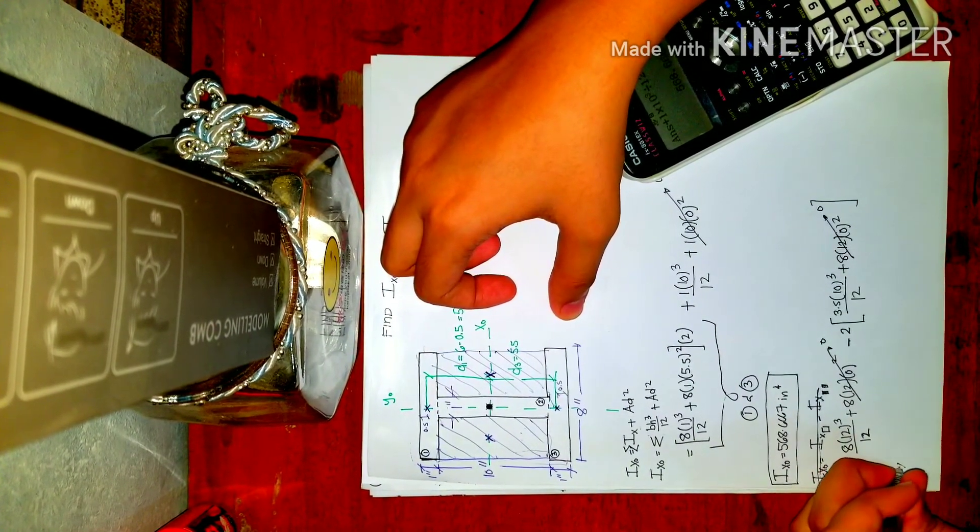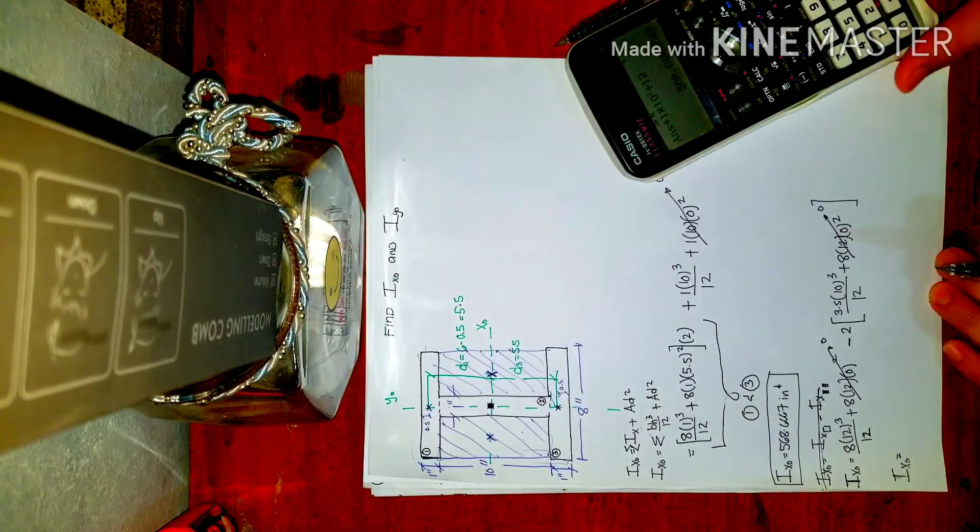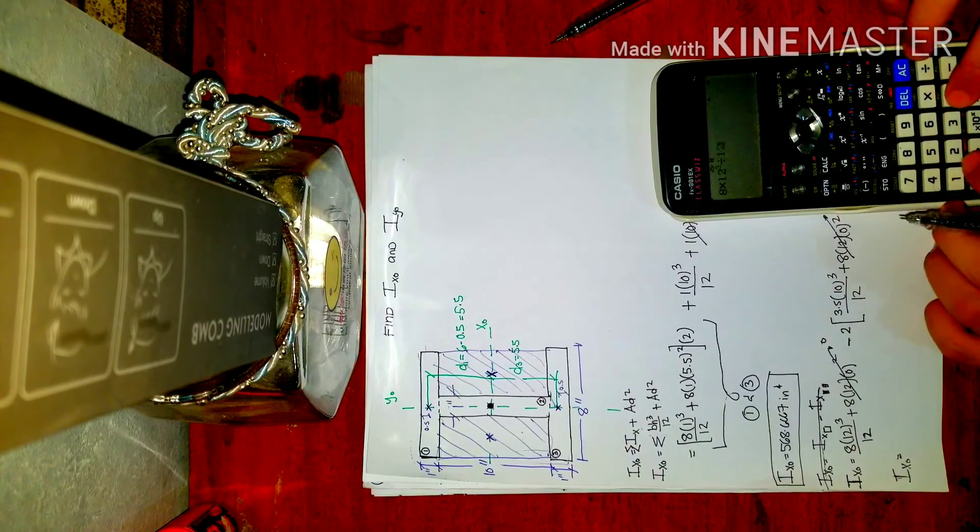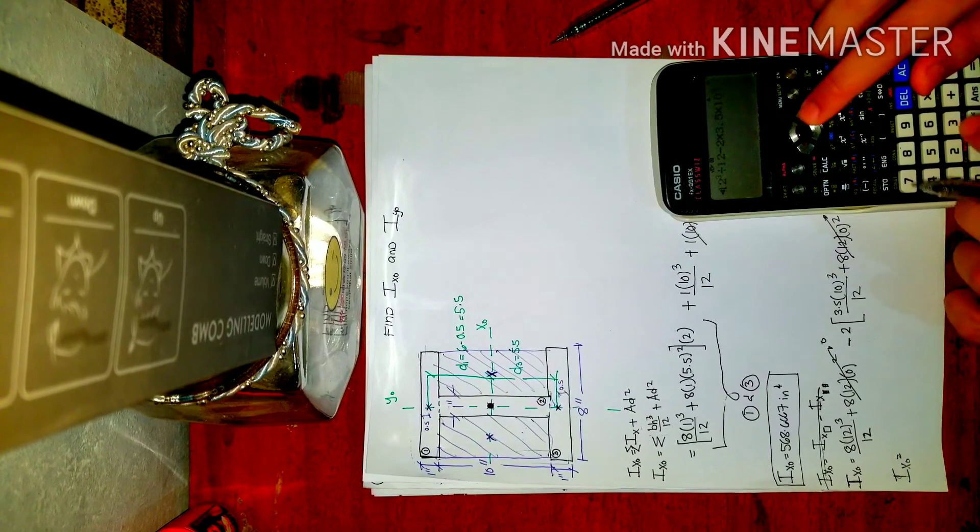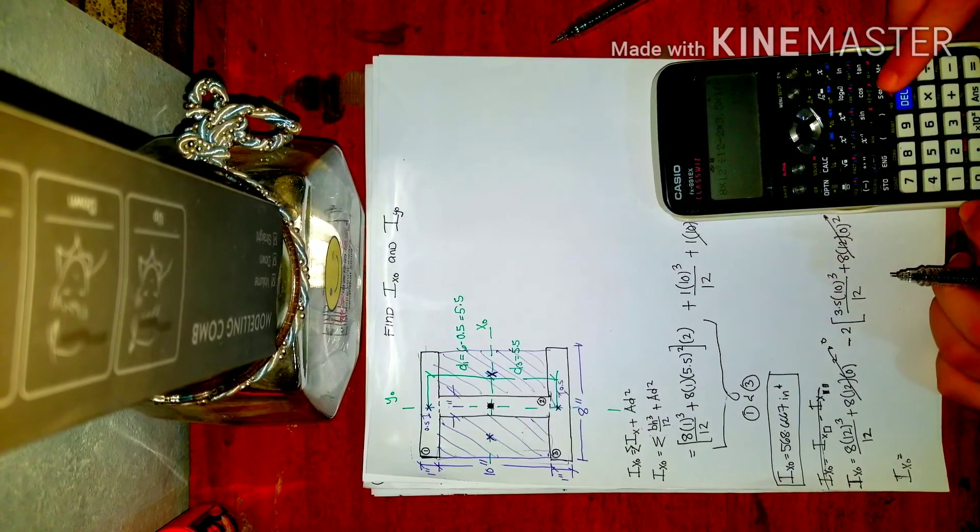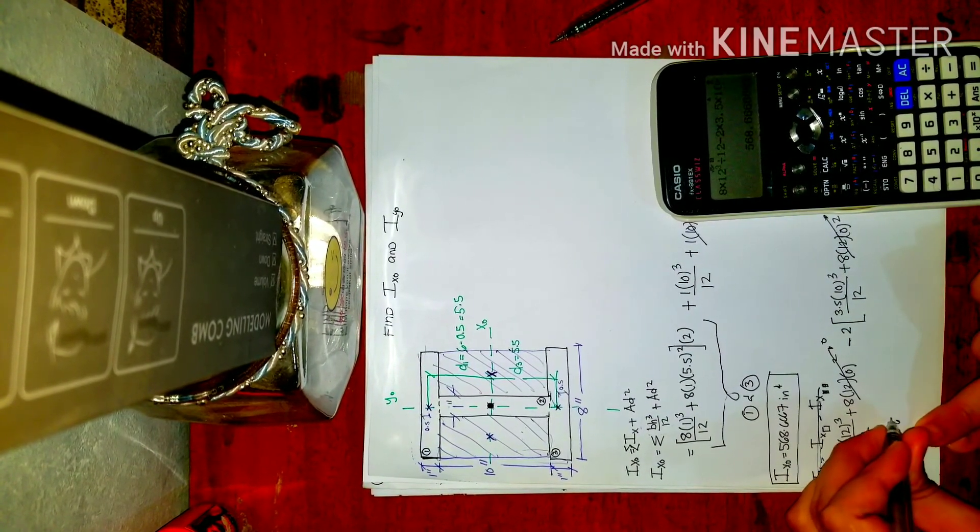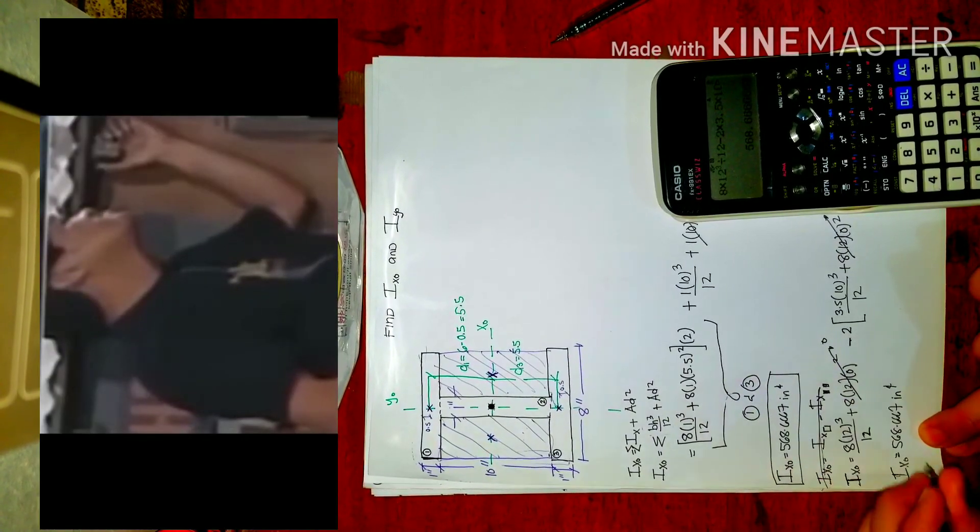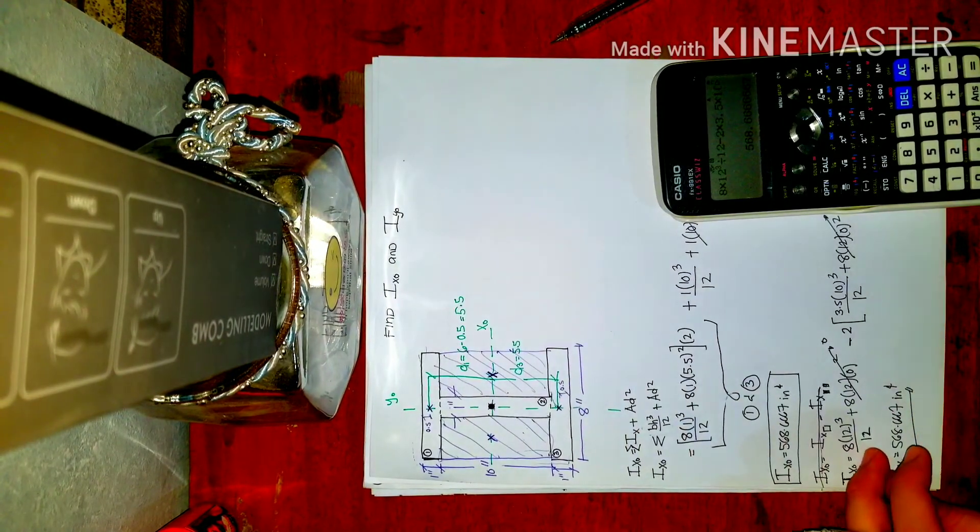So we can now compute for Ix-sub-o. They should come out the same. So 8 times 12 cubed by 12 minus 2 times 3.5 times 10 cubed divided by 12. So 568.666. So they're the same. So now you know if you guessed correctly. Okay, so next, let's find Iy-sub-o.